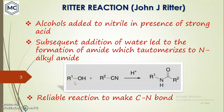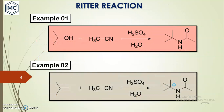You can see here the general scheme of the reaction. Alcohol and nitrile in the presence of a strong acid give the product N-alkyl amide. Next, examples of Ritter reaction — the first one: